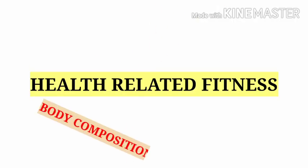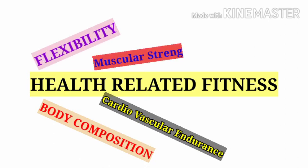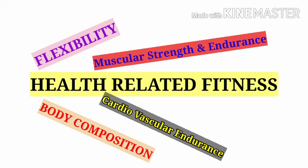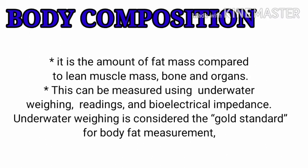Health-related fitness has five components: body composition, cardiovascular endurance, flexibility, muscular strength, and muscular endurance. Body composition is the amount of fat mass compared to lean muscle mass, bone, and organs.